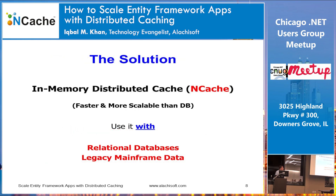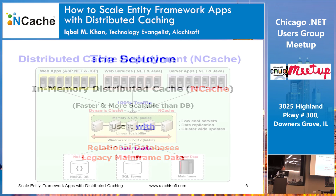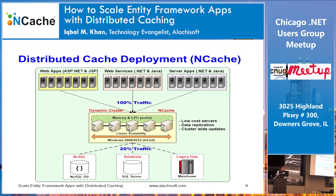The solution is to go with an in-memory distributed cache. NCache is an open source cache; there is also Redis that you've seen in Azure that Microsoft has adopted. There are also other caches like Memcached, though it's becoming less popular now because of Redis. The benefit of a cache is that it lets you continue to work with a relational database and solve the scalability problem — you can have a scalable application with your relational or legacy database.